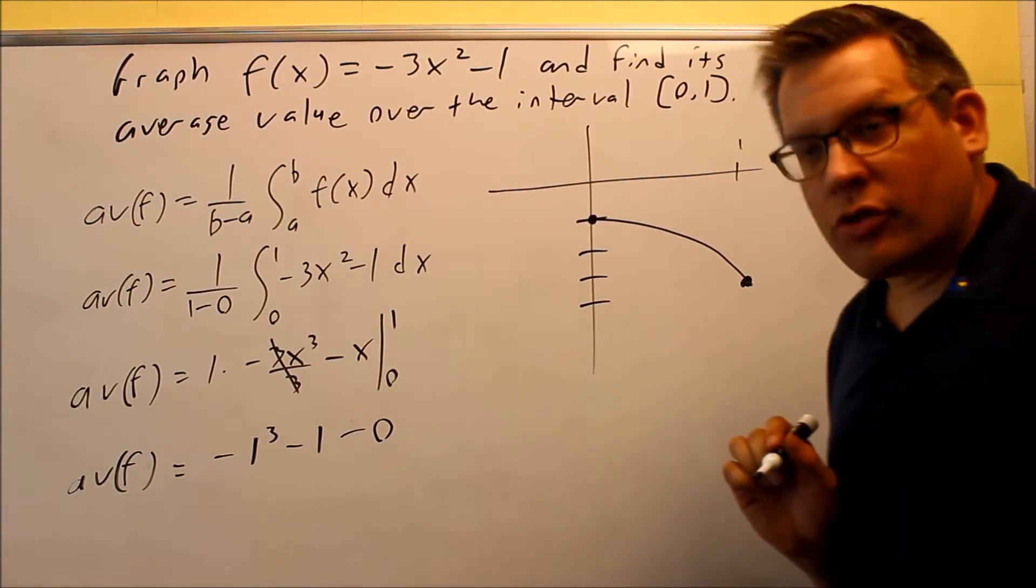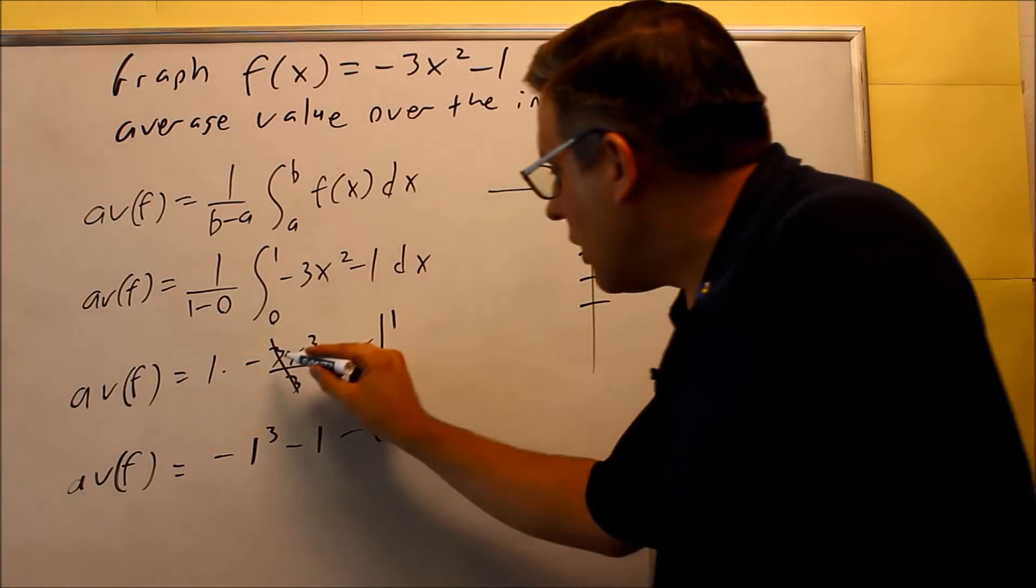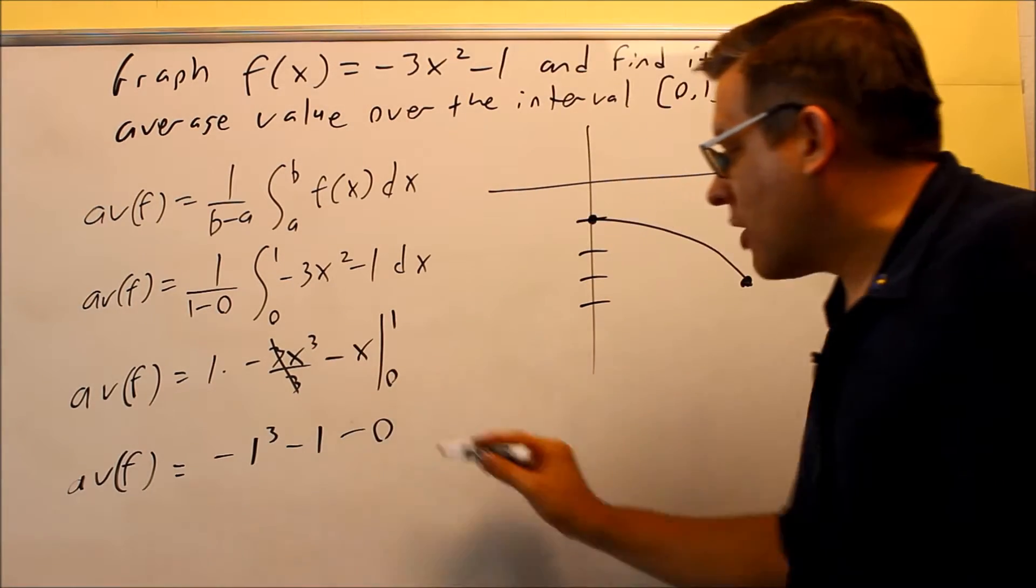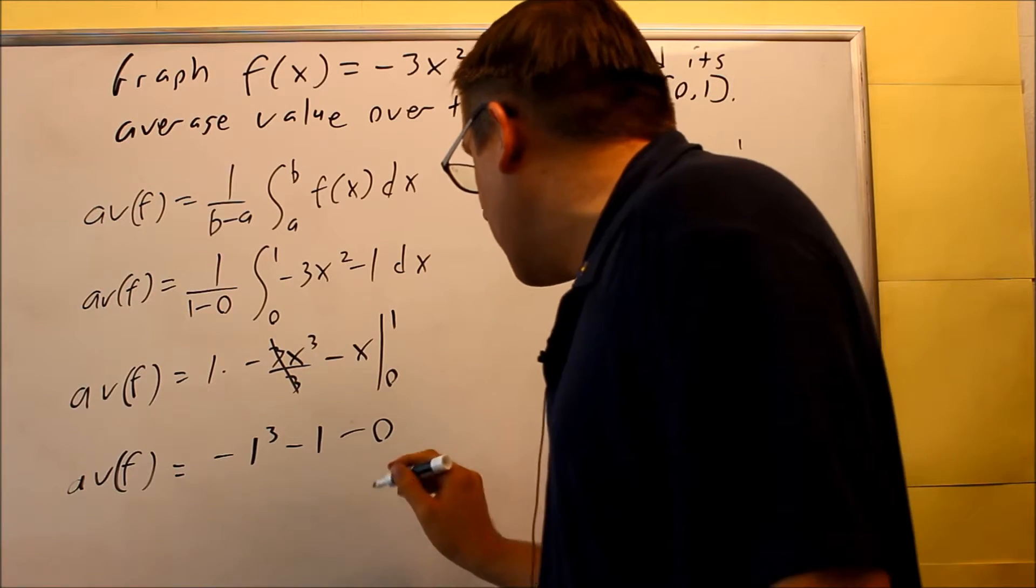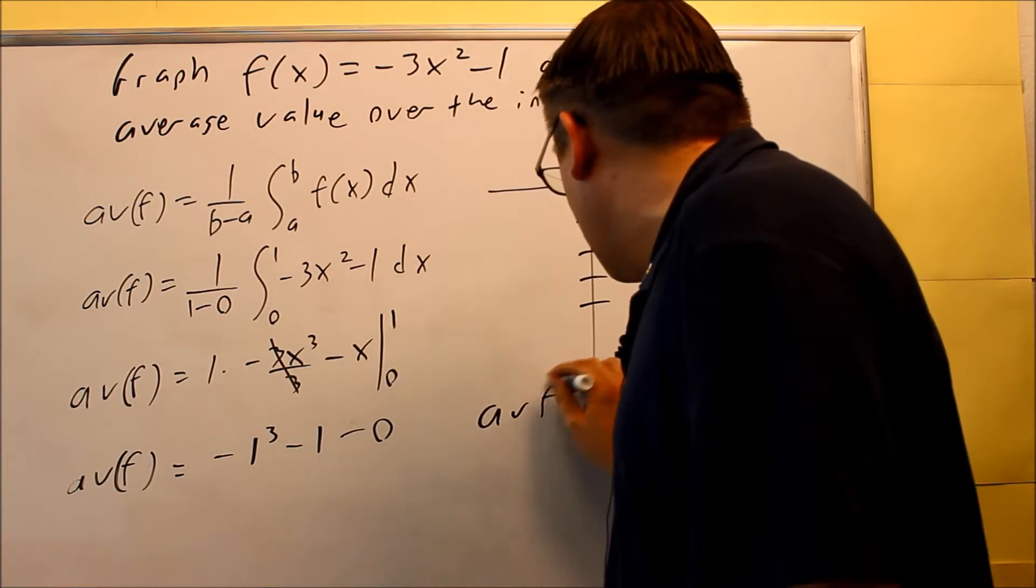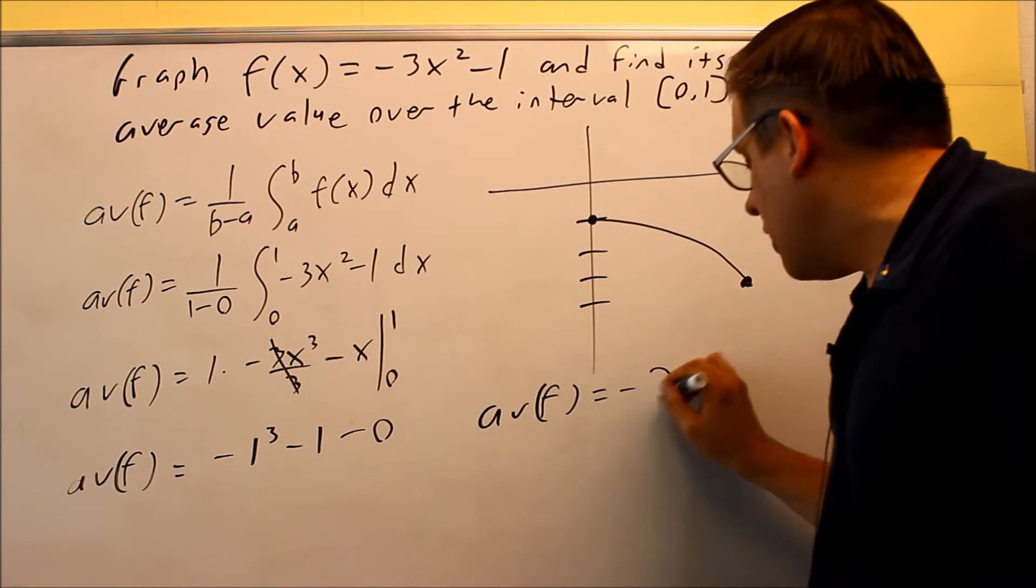Negative 0 cubed minus 0 cancels out and I get this. So when I combine all this together, I get that my average value is going to be negative 2.